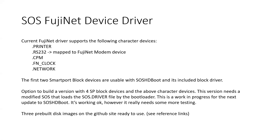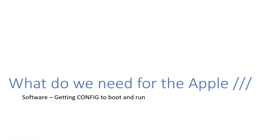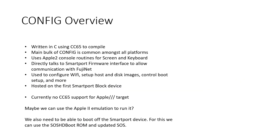We also need the config program running from FujiNet. Config is written in C using cc65, uses Apple 2 console routines in the F8 ROM for screen and keyboard, and directly talks to the SmartPort firmware interface. We use this to configure the Wi-Fi and set up host and disk images.